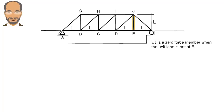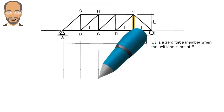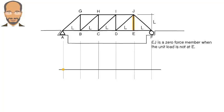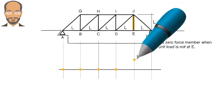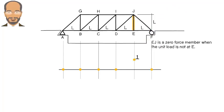Let's plot the axial load values. We have 0, 0, 0, 0, 1, and 0. Now we connect the points using straight lines, like this. This is the influence line for member EJ.